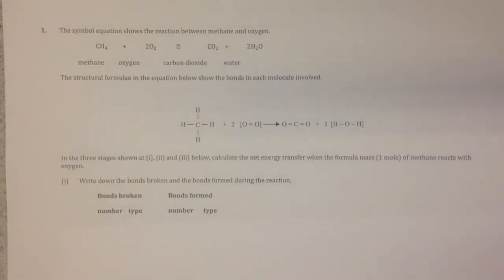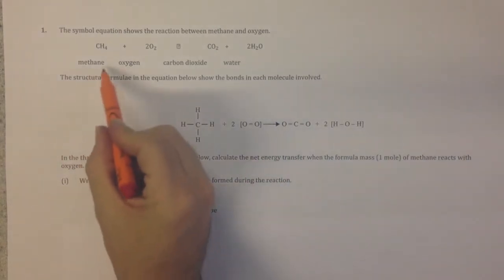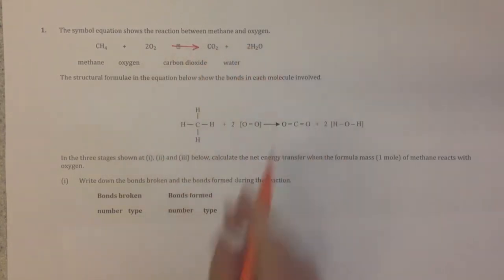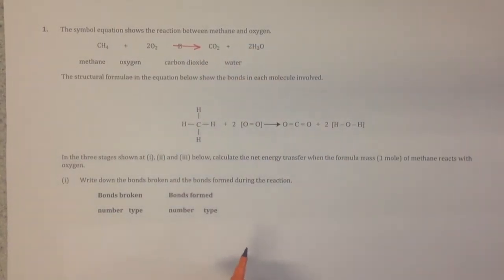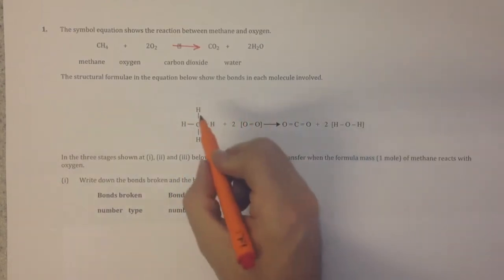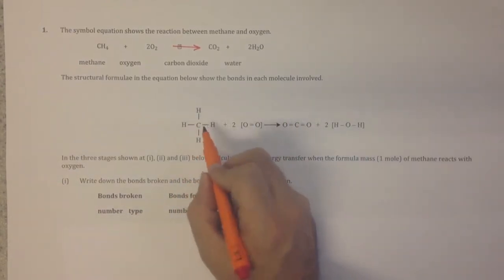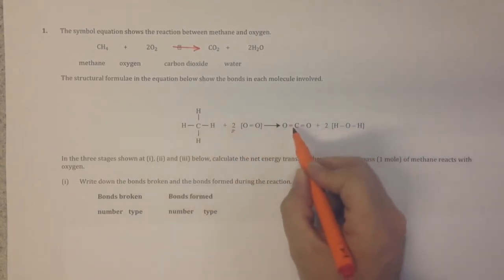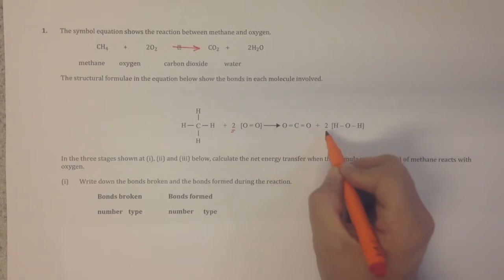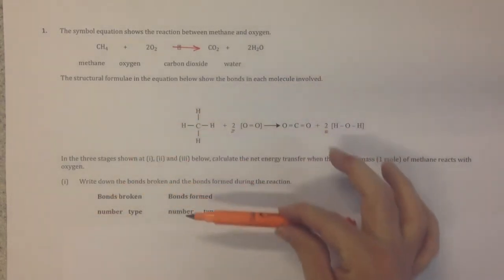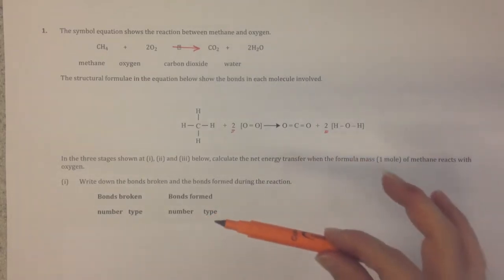This question asks how we can calculate the energy change in the reaction when methane reacts with oxygen in combustion to produce carbon dioxide and two molecules of water. The structural formula in the equation shows the bonds involved in each molecule: methane, two molecules of oxygen, carbon dioxide, and two molecules of water. The question will talk us through how to calculate the overall energy change.